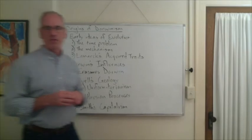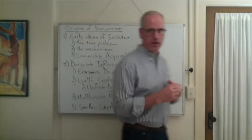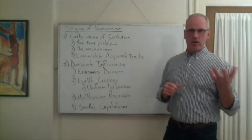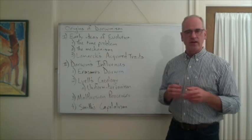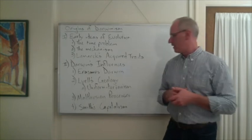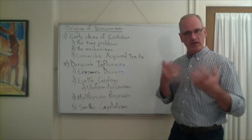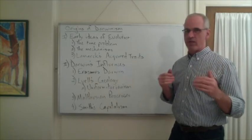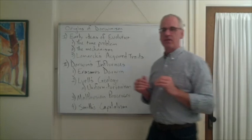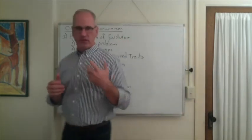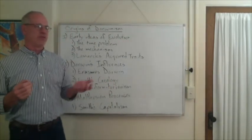A second one was Thomas Malthus. Malthus was a minister who wrote in the 1790s. Darwin had read him in college, then he read him again after he came back from the Beagle and was formulating his theory of evolution. He returned to Malthus because Malthus had given him an interesting idea.